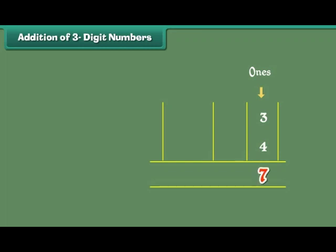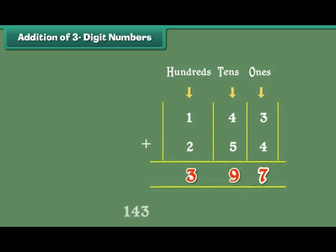The digits at the 10s place are 4 and 5. 4 plus 5 is equal to 9. The digits at the 100s place are 1 and 2. 1 plus 2 is equal to 3. Therefore, 143 plus 254 is equal to 397.